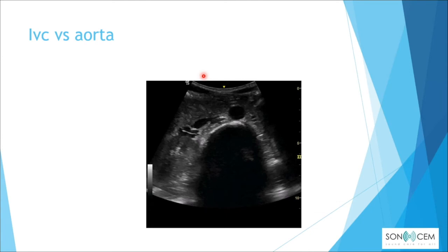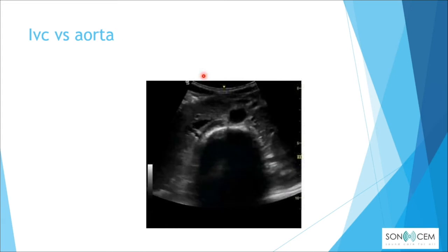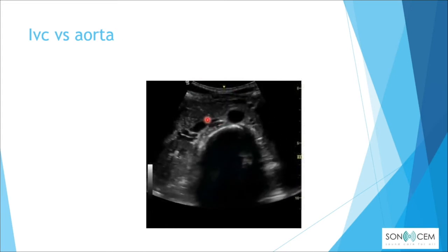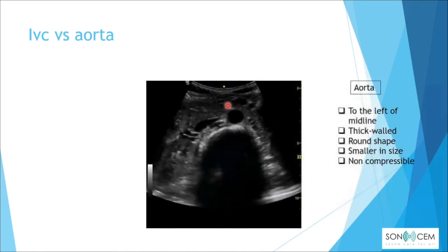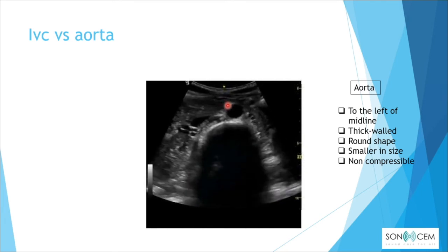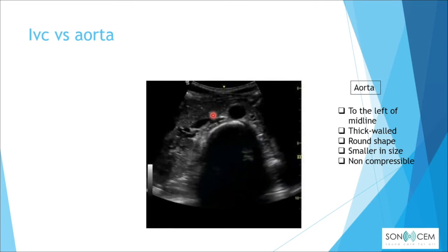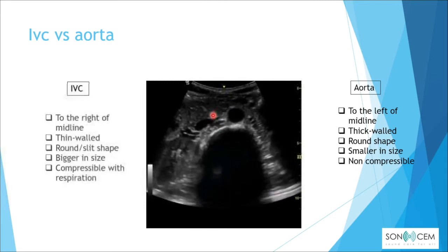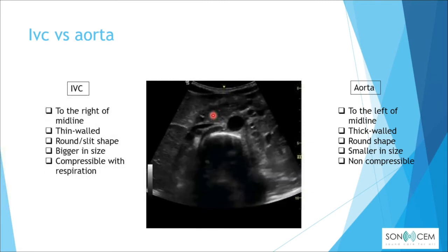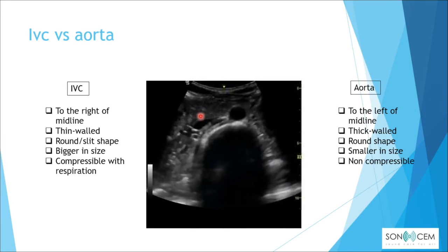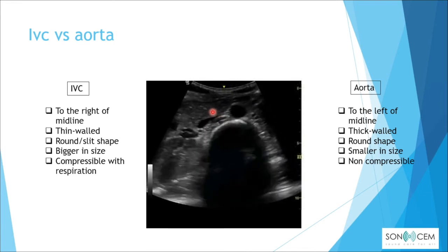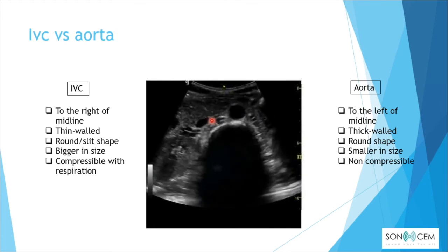The aorta and IVC sit side by side, so we need to differentiate them. The aorta has a rounded shape, is located to the left of midline or midline, has a thick wall, is smaller in size, and is non-compressible. The IVC is to the right of midline, has a thin wall, can be round or oval-shaped, is bigger in size, and is compressible with respiration.